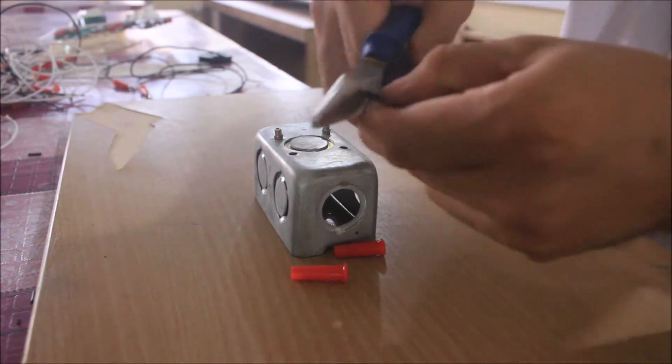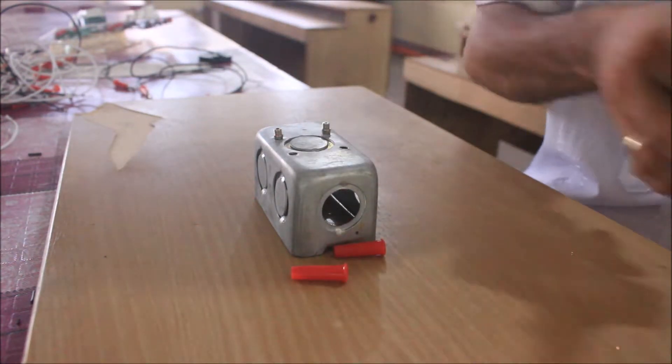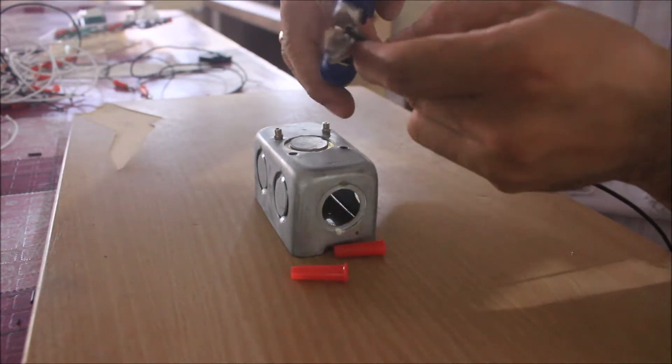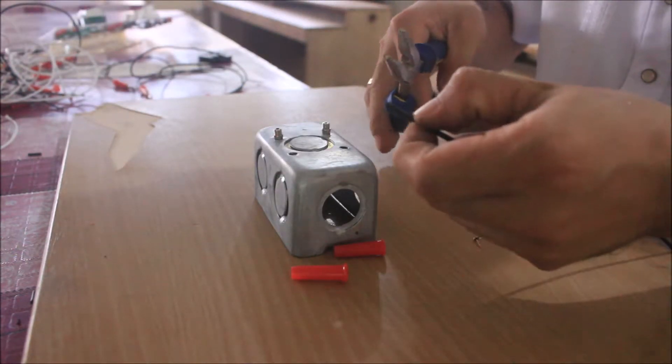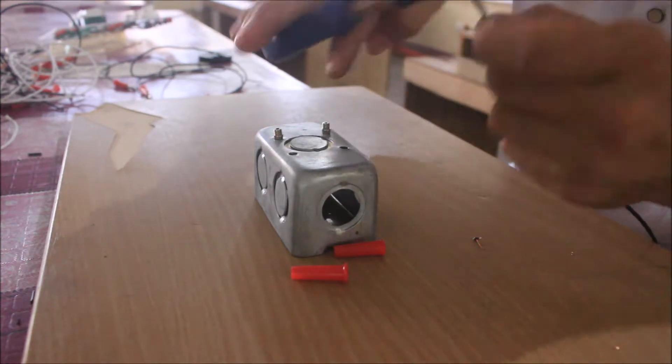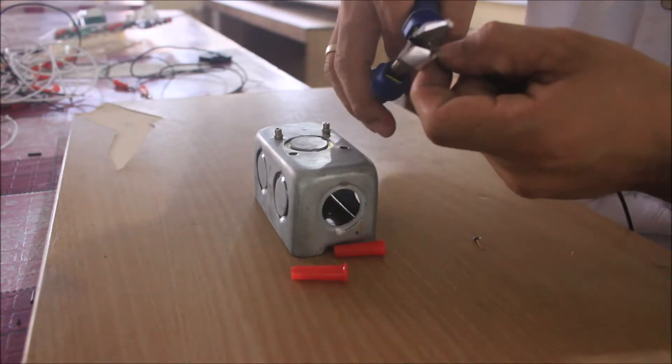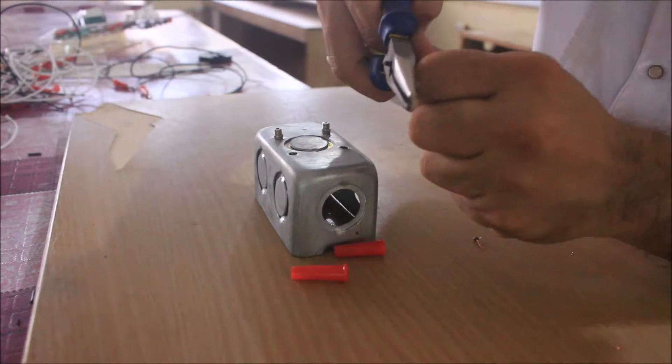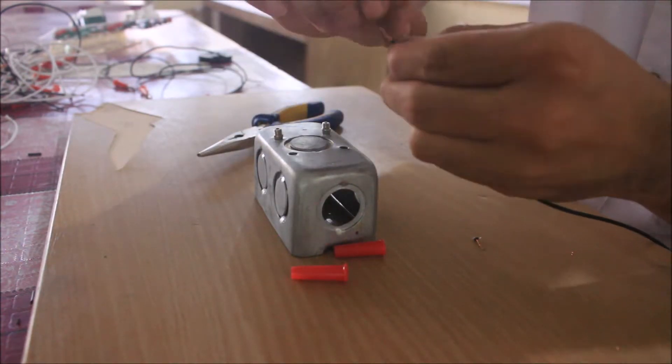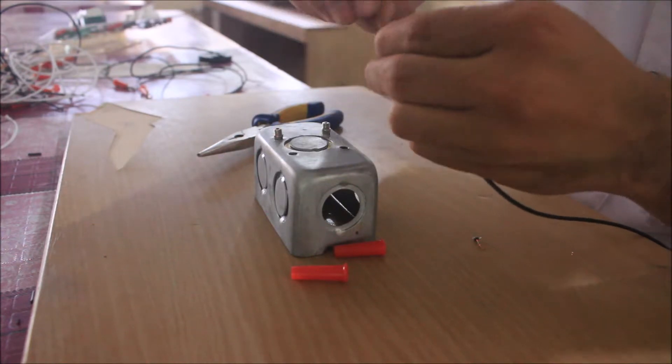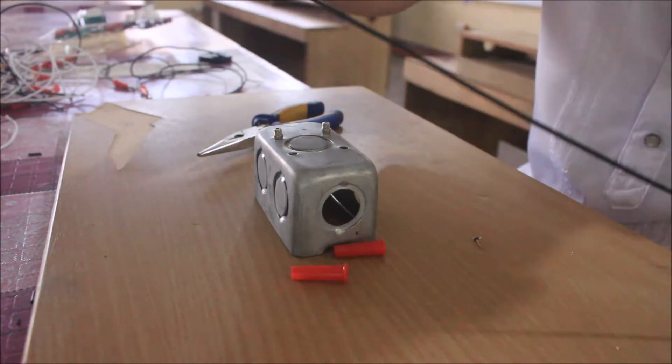And then I am cutting the wires in order to show the way I am going to strip my wire. I am stripping my wire for about five millimeters, and then I twisted it in order to have a solid connection.